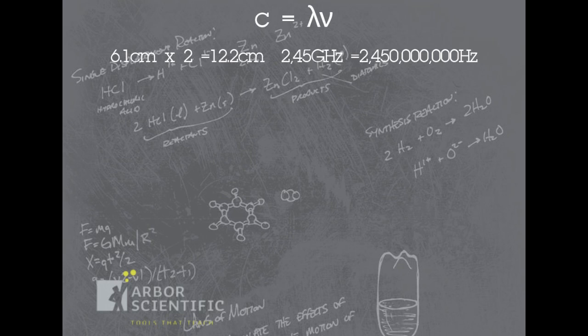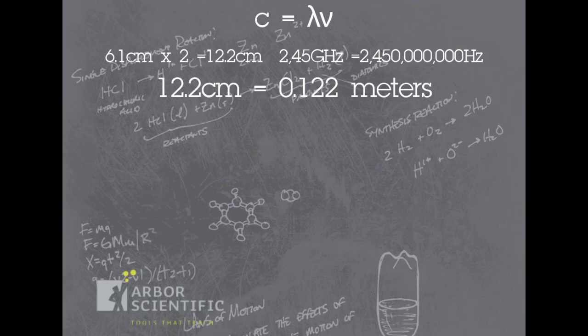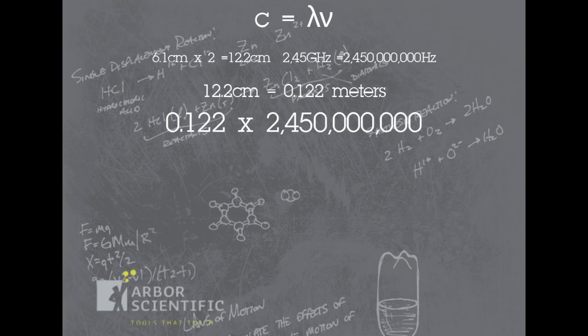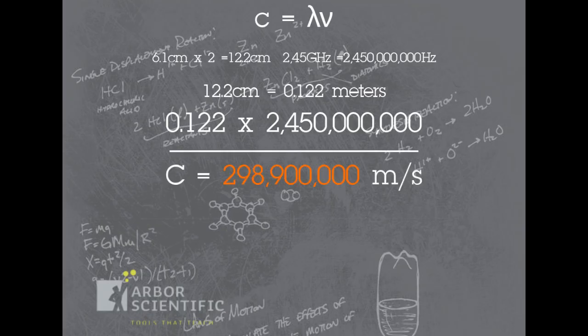We calculate the full wavelength by multiplying our measurement by 2, which comes out to 12.2 cm for the full wavelength. Next, we convert centimeters to meters for our speed of light calculation, which gives us 0.122 m times the 2,450,000,000 Hz. And that equals 298,900,000 m per second.